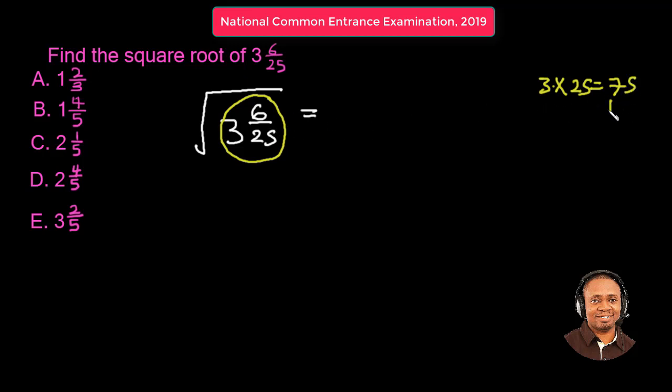Then we add it to the numerator and that will give us 81, the new numerator. So we have 81 over 25. So this is what was converted to the mixed fraction 3 whole number 6 over 25.